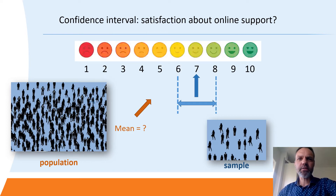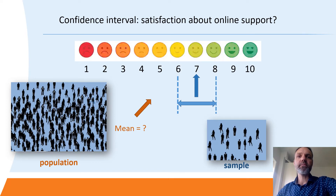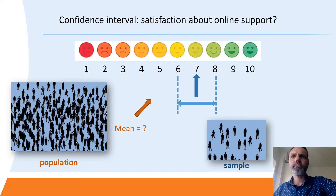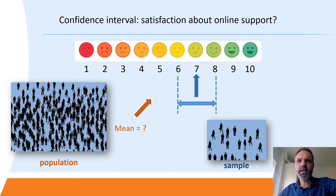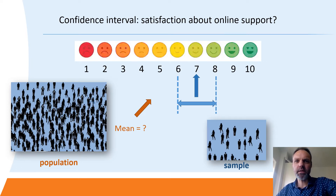The confidence interval expresses this range. Based on your sample, it's reasonable to say that the mean satisfaction lies, in this example, between six and eight. The width of the confidence interval is determined to a large extent by the size of your sample. So if your sample size goes down, the confidence interval increases, and that in turn affects the accuracy of how well your sample estimates the true values in your population.